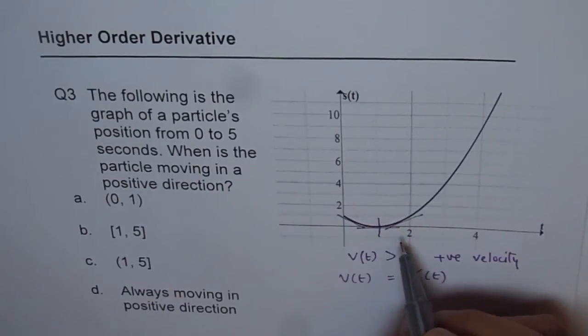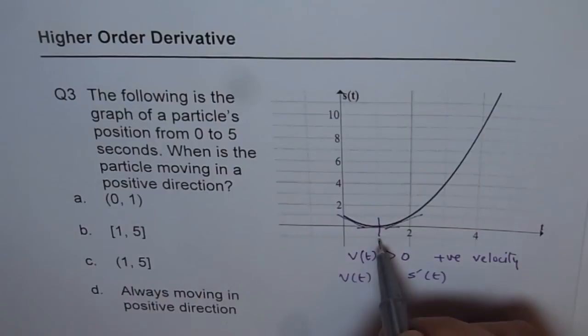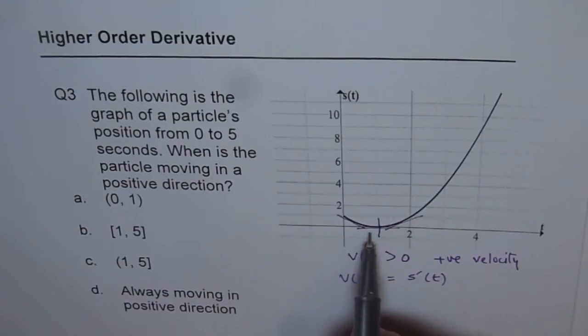So the answer is from 1 to 5. 1 should not be included because at 1 the velocity is 0.